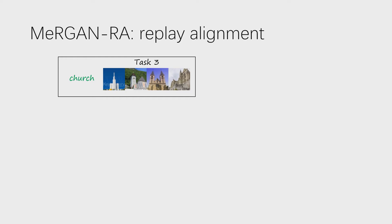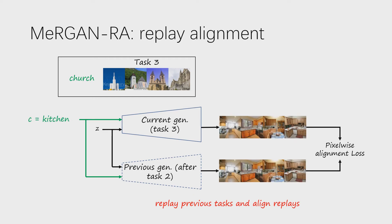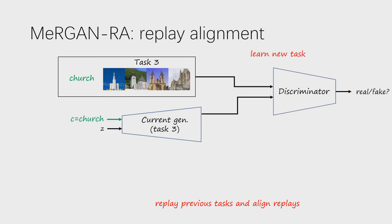MaGAN using replay alignment relies on aligning the replays of the current generator and Replay Generator using a pixel-wise loss. Note that at the beginning of the new task, the two generators are exactly the same, so the same input generates the same output. Learning the new task will interfere with performing the previous one, so we try to prevent that by penalizing misalignment between the replays generated when conditioned on previous tasks. The new task is learned by conditioning the generator on the new category and trained as a conventional GAN with one category.